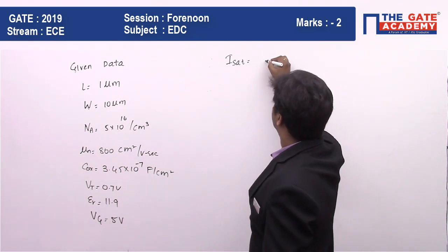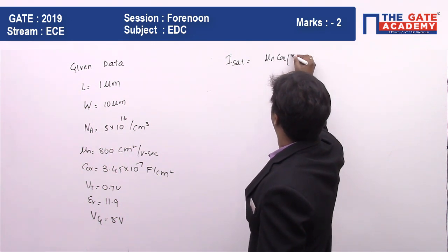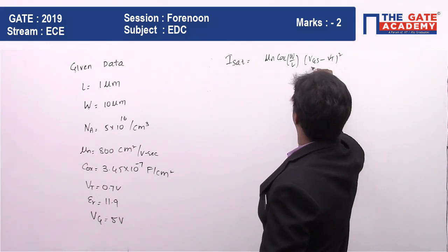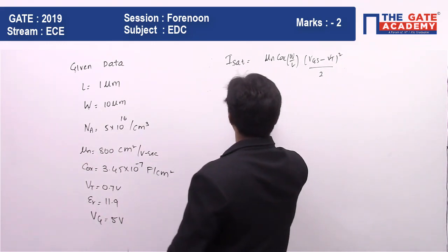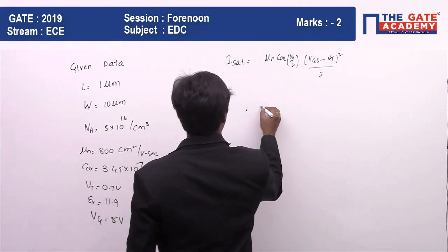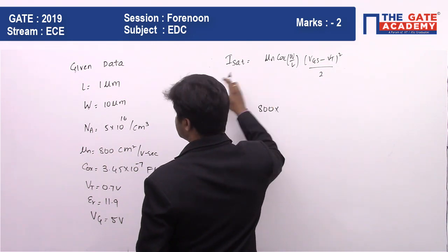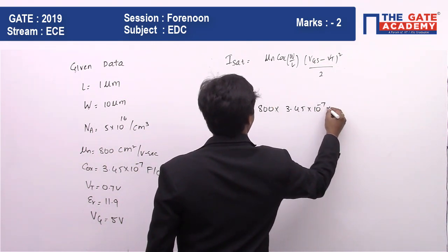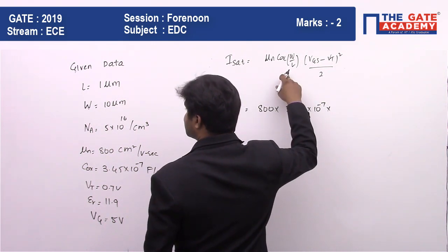μn Cox (W/L) (Vgs - Vt)² divided by 2. So what is μn? 800. Cox is 3.45×10^-7, multiplied by W/L. What is W/L? It is 10.